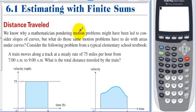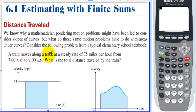We know why a mathematician pondering motion problems might have been led to consider slopes of curves, but what do those same motion problems have to do with areas under the curves? Consider the following problem from a typical elementary school textbook: a train moves along a track at a steady rate of 75 miles per hour from 7 a.m. to 9 a.m. What is the total distance traveled by the train?